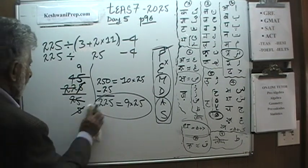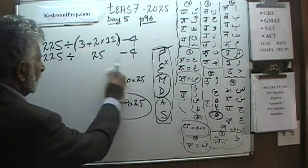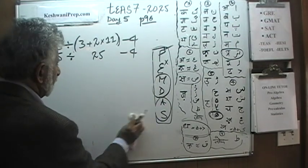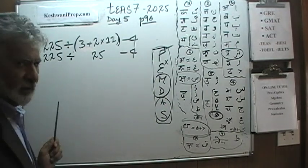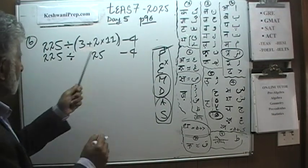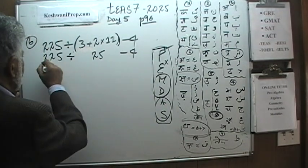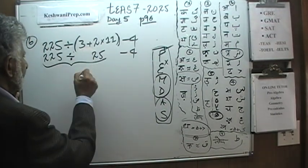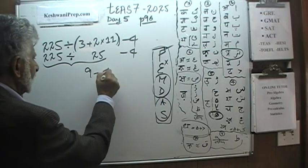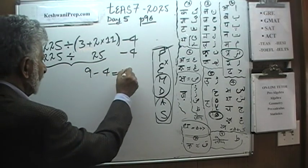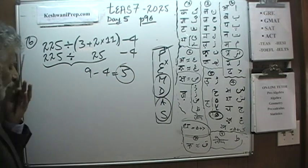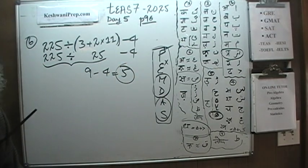So we are left with 9 minus 4, which gives us 5. The answer to problem number 6 is 5.